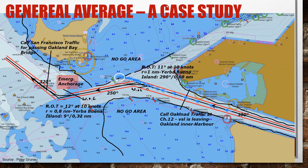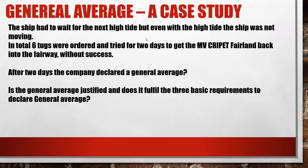The ship had to wait for the next high tide, but even with the high tide the ship was not moving. In total, six tugs were ordered and tried for two days to get the motor vessel back into the fairway without success. After two days, the company declared general average. The question is: is the general average justified, and does it fulfill the three basic requirements to declare general average? Can the cargo owner deny to contribute to general average costs?